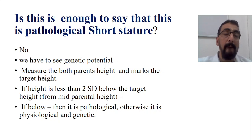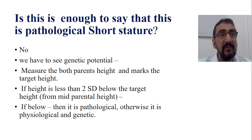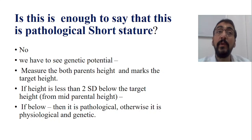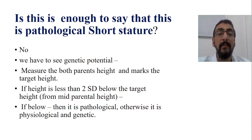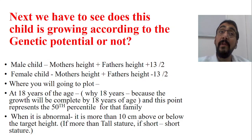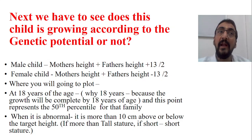Now suppose the child is having short stature — less than third percentile — but he is growing according to the genetic potential. How to find out that? That is by calculating the mid-parental height. Next we have to see whether this child is growing according to the genetic potential or not. If it is not growing according to the genetic potential, we will consider the diagnosis of pathological short stature. If he is growing according to the genetic potential but still he is under the third percentile or at the borderline, then usually we will say that this particular short stature is familial short stature.